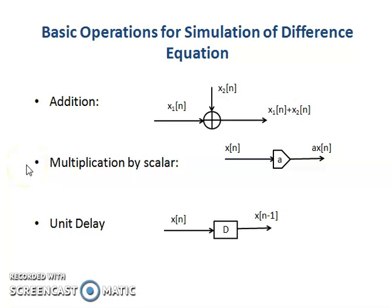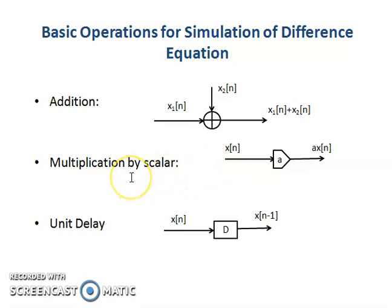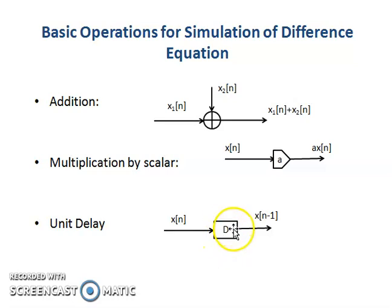Next we look at three basic operations for simulation of a difference equation. The first is addition, the second is multiplication by a scalar, and the third is unit delay. As shown, the block for addition is called an adder, where x1(n) is added to x2(n) to produce x1(n) + x2(n). For multiplication by scalar, x(n) is scaled by a scalar value a to obtain a·x(n). For unit delay, x(n) is applied to a unit delay block to obtain x(n-1).